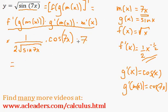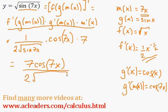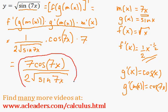Now, I can quickly simplify this whole thing into 7 cos of 7x all over 2 root of sine 7x. And that is the final answer using the chain rule.